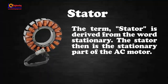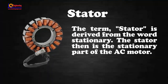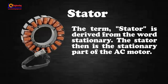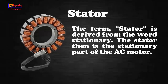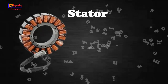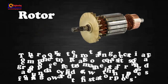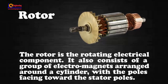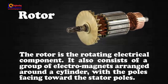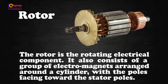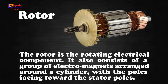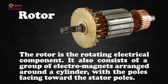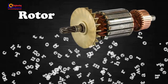The term stator is derived from the word stationary. The stator is the stationary part of the AC motor. The rotor is the rotating electrical component. It also consists of a group of electromagnets arranged around a cylinder with the poles facing toward the stator poles.